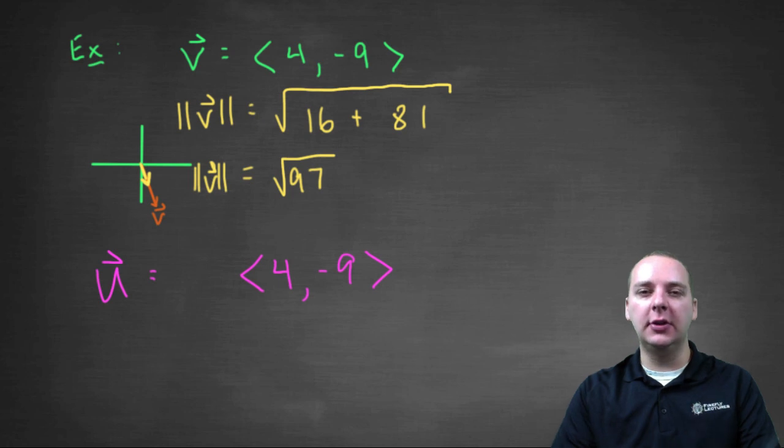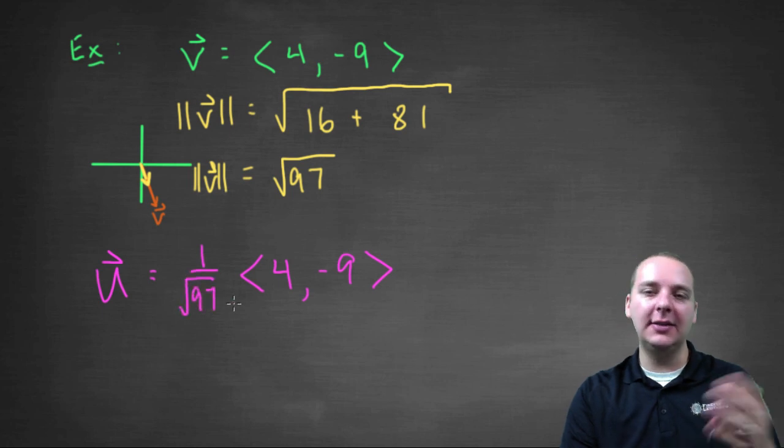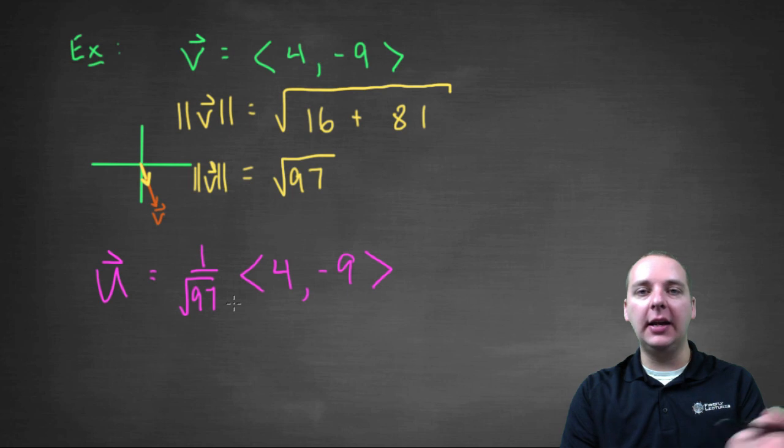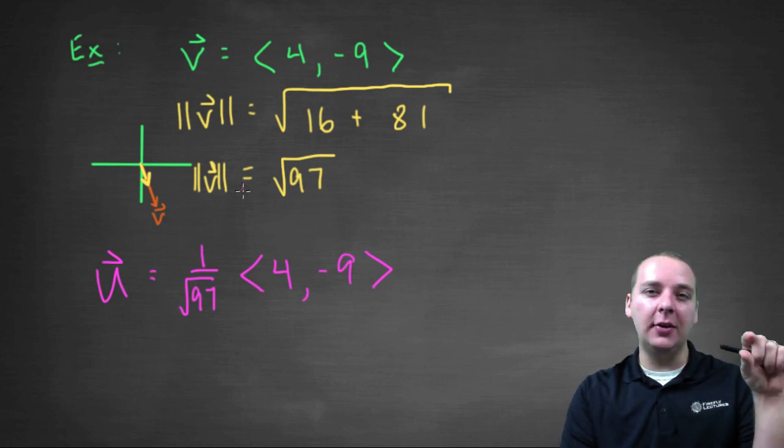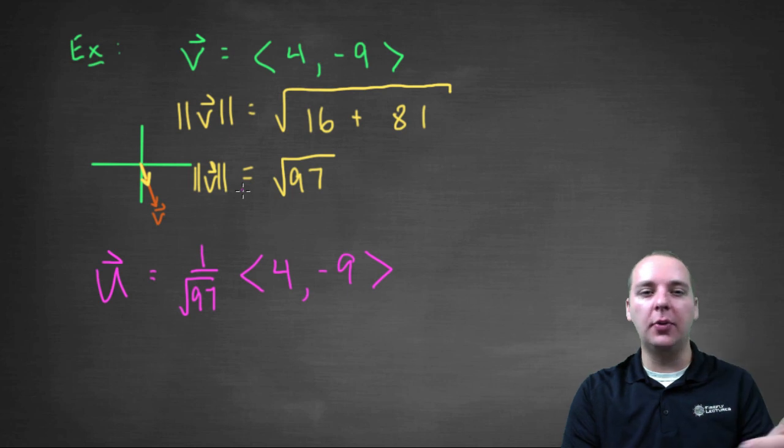But a lot of times, just to conserve space and just to help it make a little bit more sense, sometimes I'll write one over root ninety-seven out front, because again that's just like dividing by root ninety-seven, but that way it's written more like a scalar times a vector or a scalar multiplication.